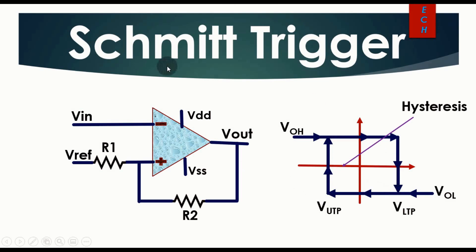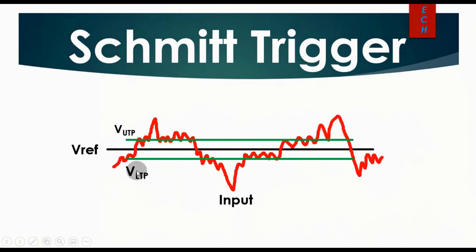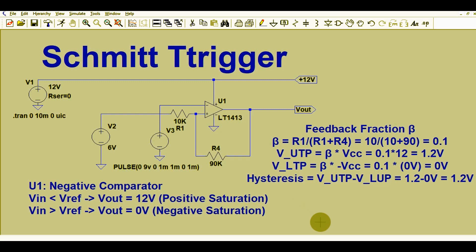Why do we need a Schmitt trigger? Let us assume you have a noisy environment and your input signal is noisy. This is the reference signal, this is the noisy input signal, and there is a hysteresis between the upper trip point and the lower trip point. If your signal fluctuates within that area it will hold a certain state. So if your analog signal is very noisy, you need a comparator with hysteresis.